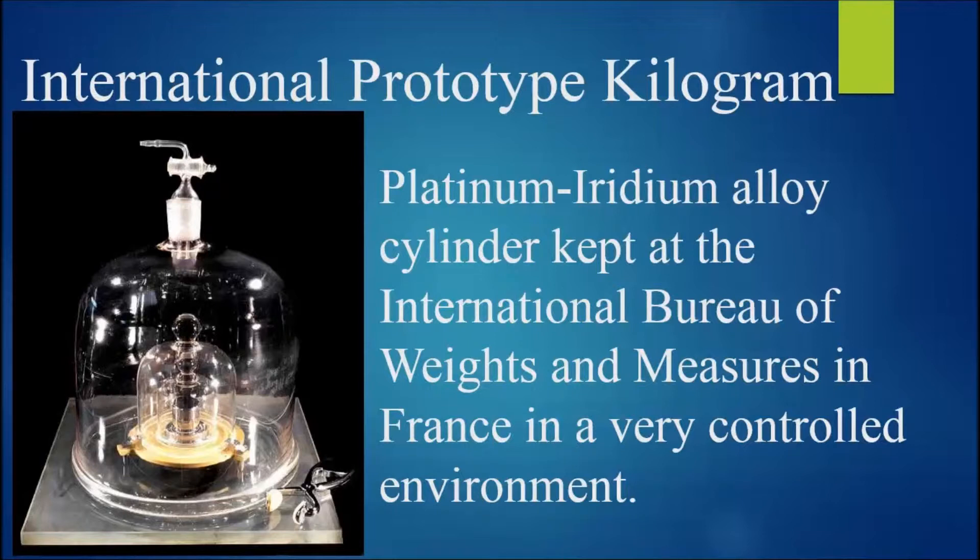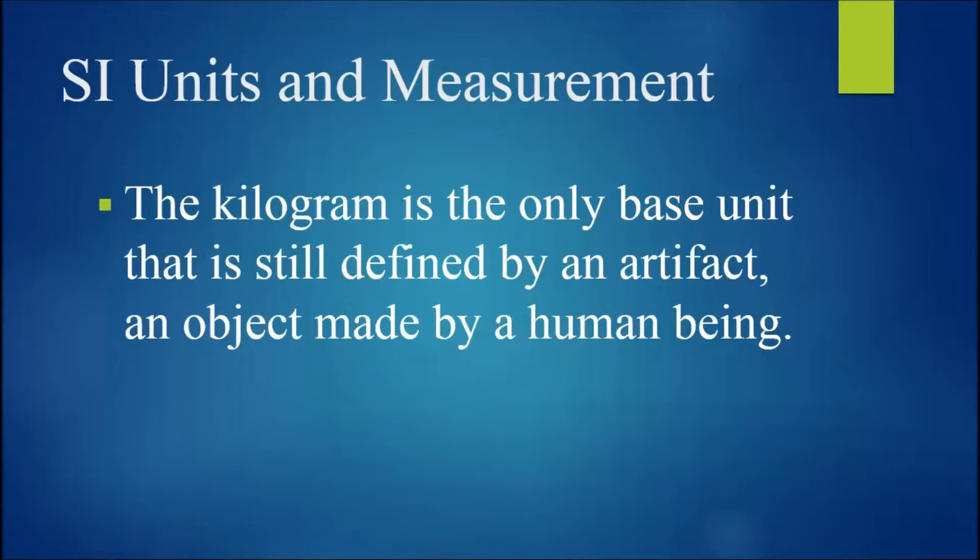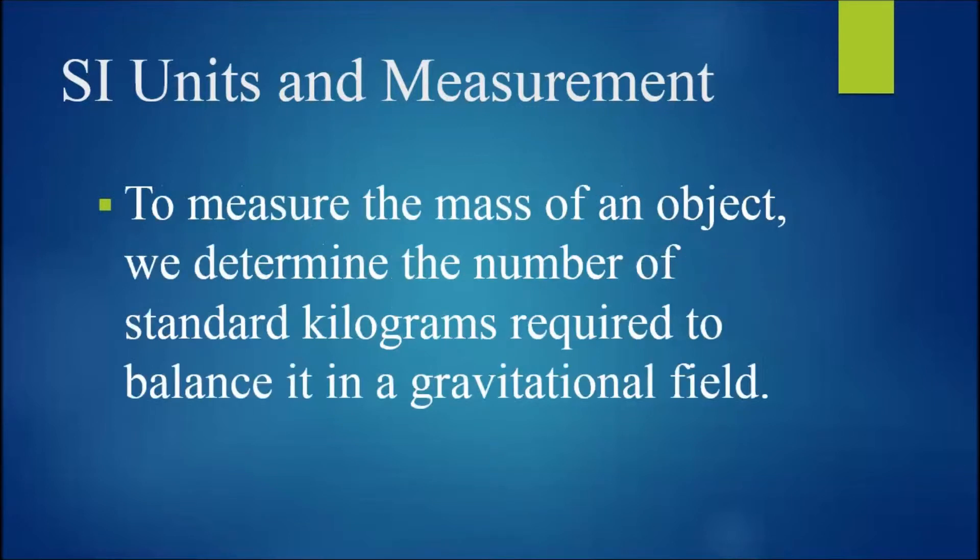The kilogram is defined to be the mass of a specific cylinder composed of a platinum iridium alloy that is kept at the International Bureau of Weights and Measures in France in a very controlled environment. Here we see a copy of that international standard kept at the National Institute of Standards and Technology in the United States. The kilogram is the only base unit that is still defined by an artifact. To measure the mass of an object, we determine the number of standard kilograms required to balance it in a gravitational field. Modern laboratory balances are calibrated to do just that.